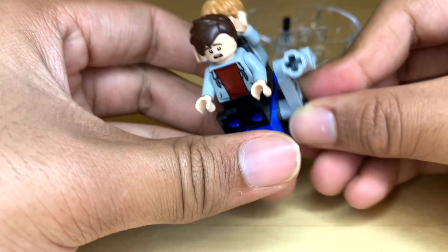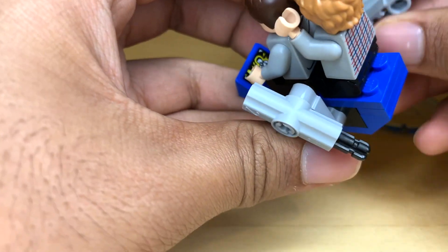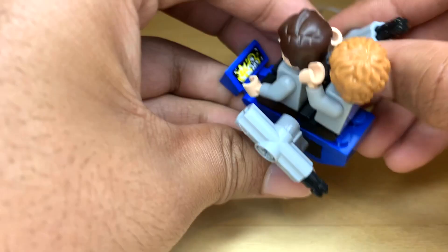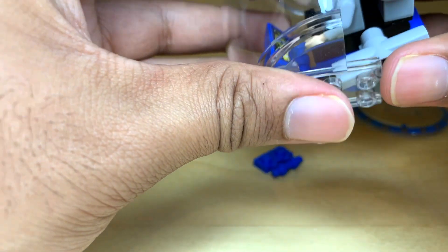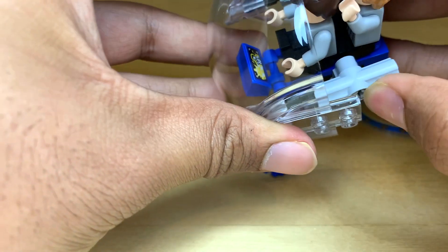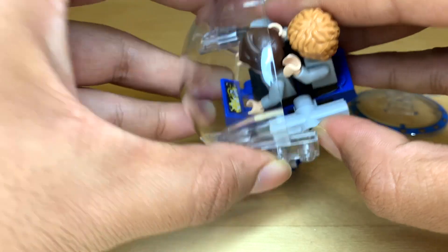So now all we have to do is some easy reassembly, and then we're ready to pop this back into the gyrosphere shell and get rolling. I kind of hate how fiddly these things are, but they're really cool.